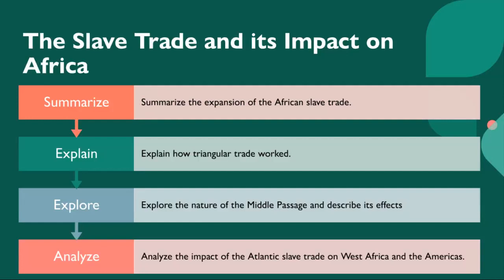We'll begin by summarizing the expansion of the African slave trade — when Europeans started enslaving and transporting more and more workers outside of Africa. We will explain how the triangular trade worked. Briefly, a triangular trade is a trade between three ports or regions, and usually evolves when a region has export commodities — in this case, slaves — that are not required in the region from which its major imports come. It has been used to offset trade imbalances between different regions.